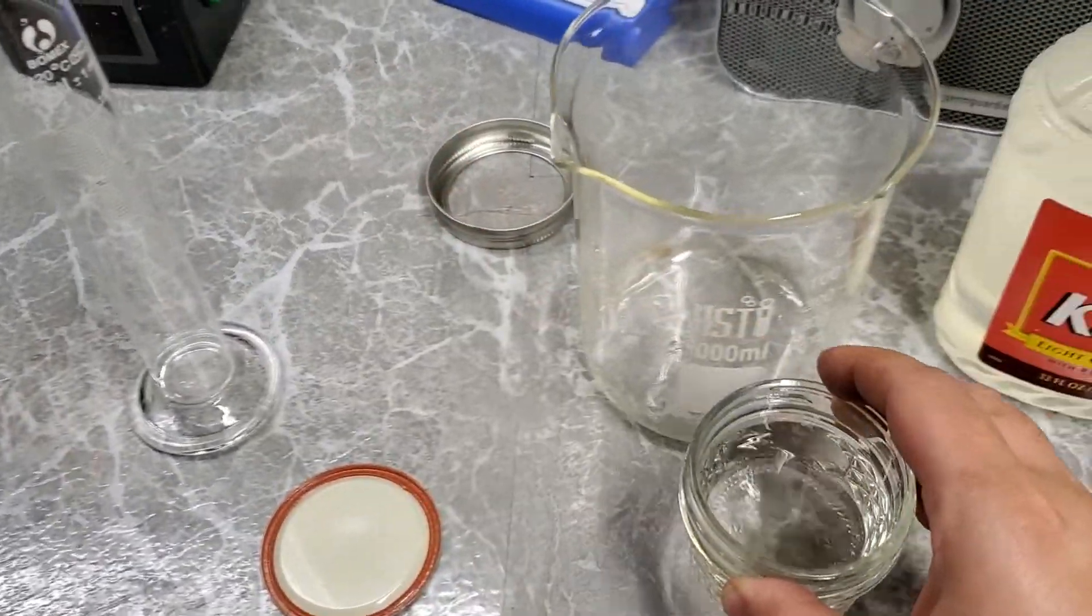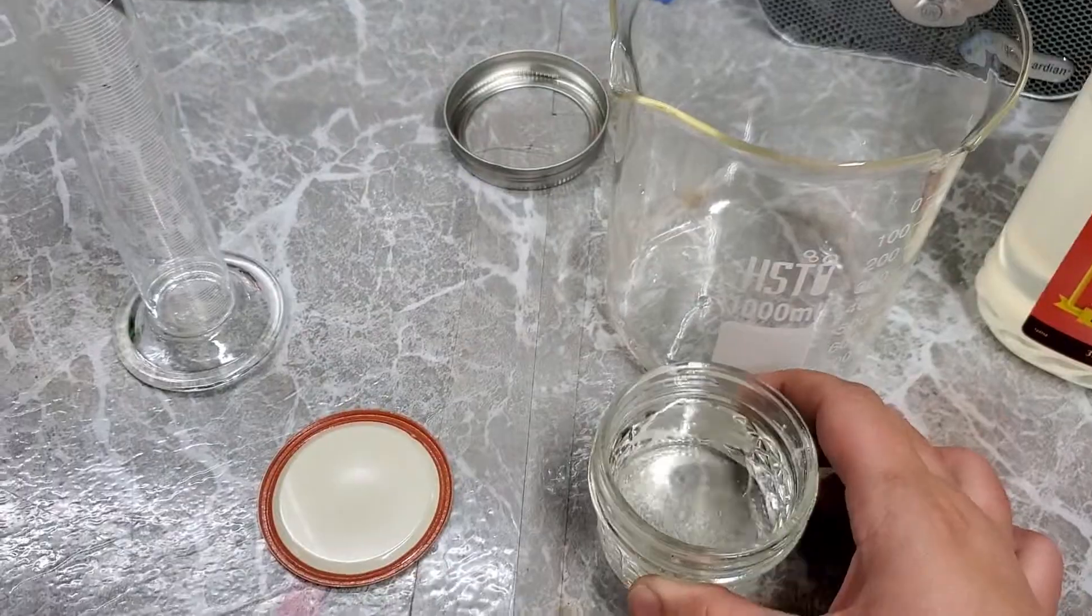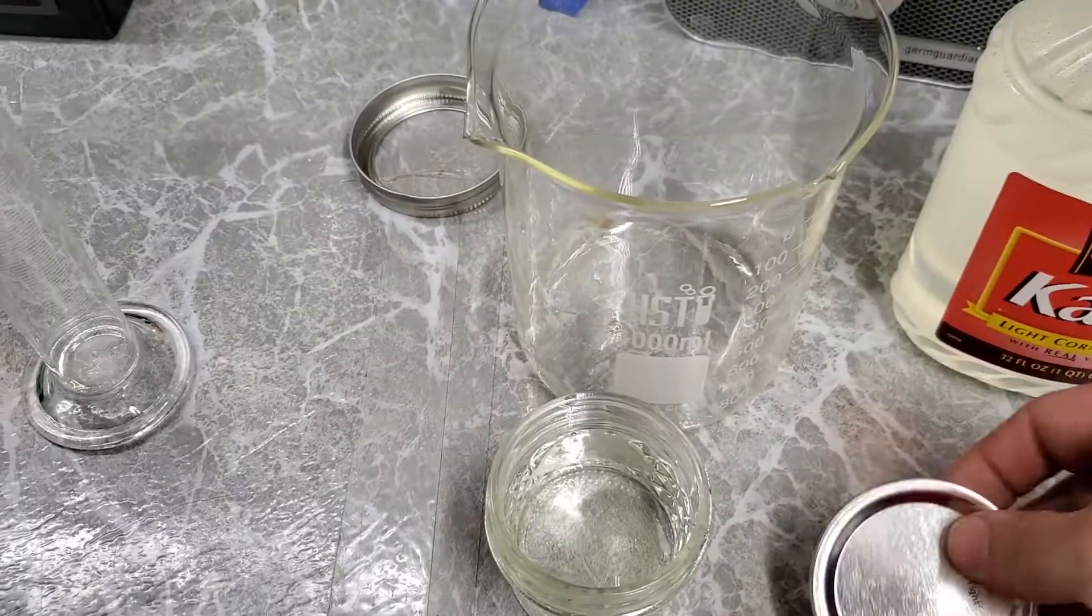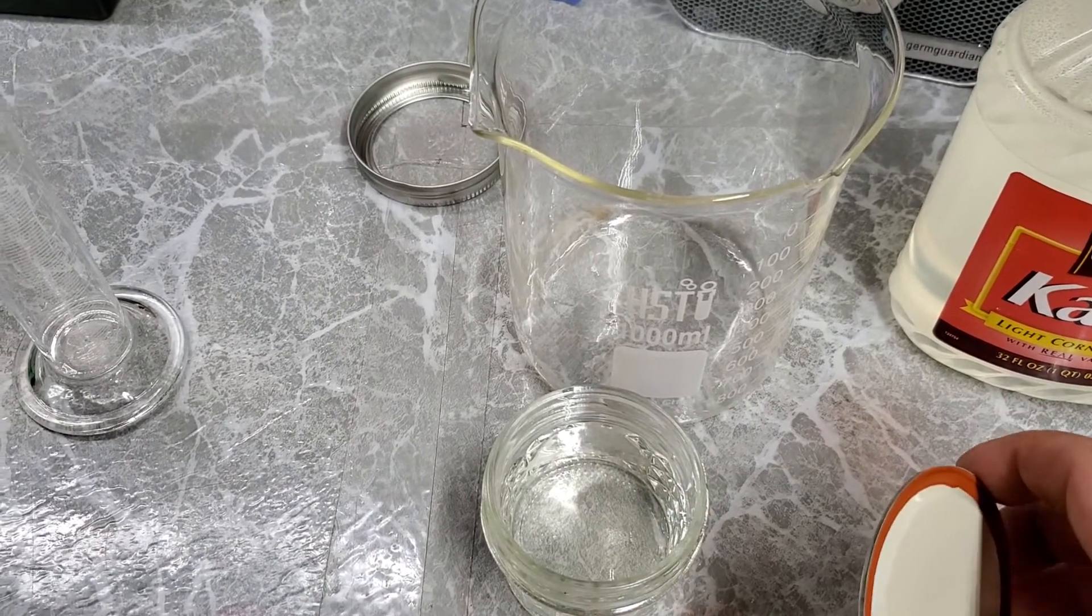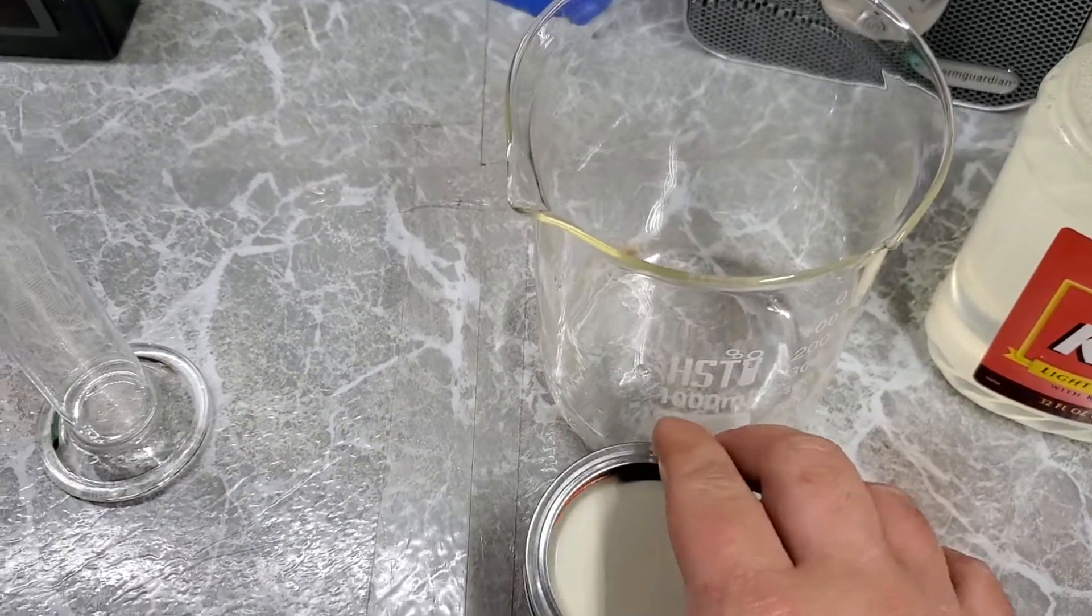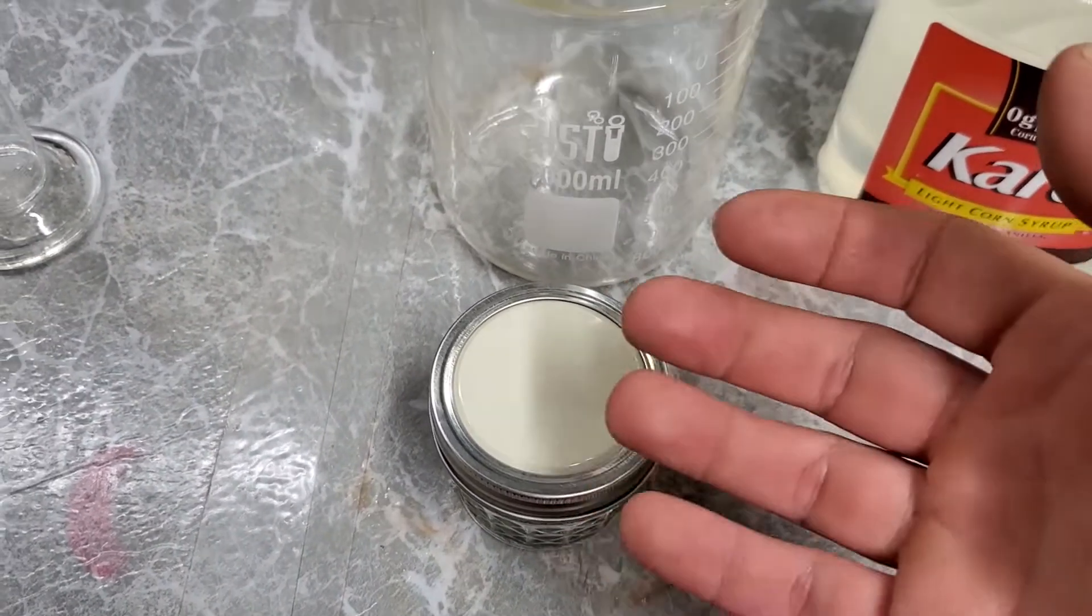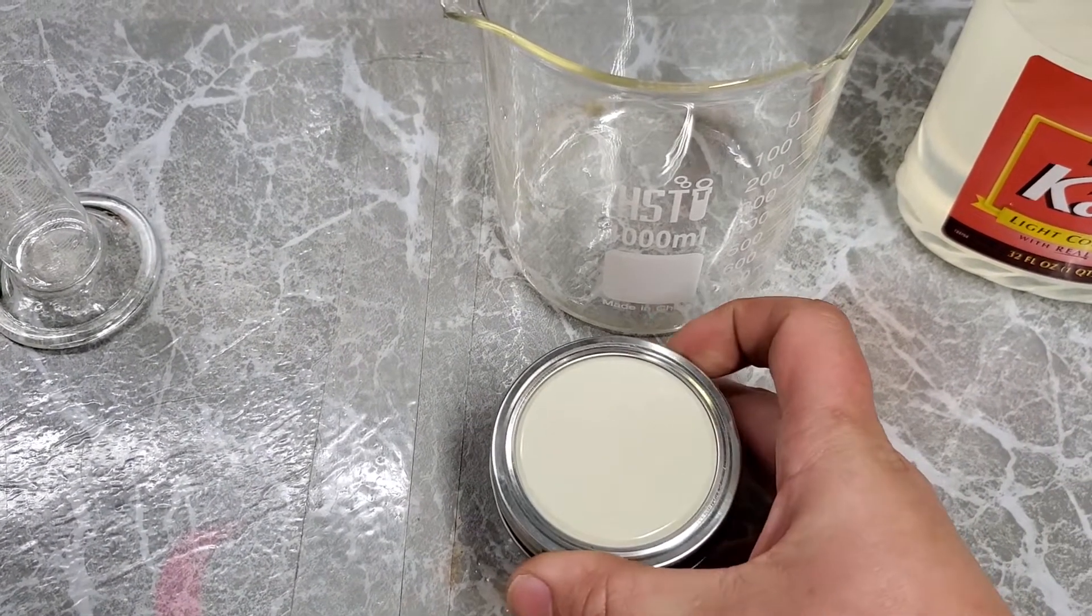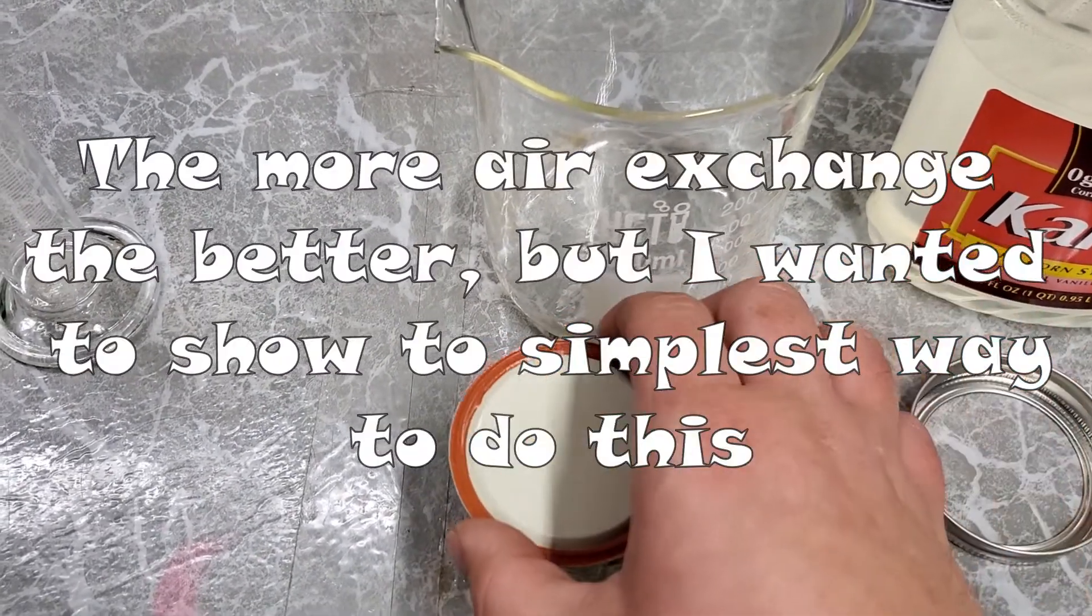If you're going to go this route, just use ball mason jars. The nice thing about mason jars is they already come with a lid and ring. The cool thing is whenever you sterilize this and get it ready to inoculate, if you turn the lid upside down and put the ring on, you do not need any other means of air exchange because by putting that lid on upside down it's not going to create a seal and your culture will get enough oxygen in order to grow.